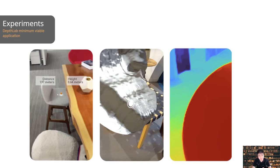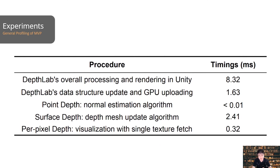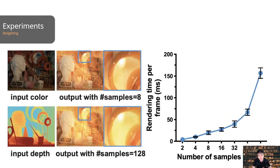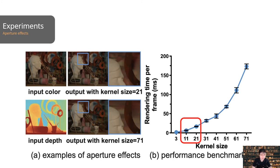We built a minimum viable application to profile typical usage of DepthLab. To evaluate key component performance, we tested a point depth example (the oriented cursor), a surface depth example (depth mesh generation), and a per-pixel depth example (depth map visualization), running experiments in five locations for five minutes each. Our sample application runs at over 100 frames per second, with surface depth being the most time-consuming part. For real-time relighting, we recommend four to eight samples per ray on Pixel 3 or comparable devices. For the wide aperture effect, we recommend a kernel size of 11 to 21 for real-time performance.